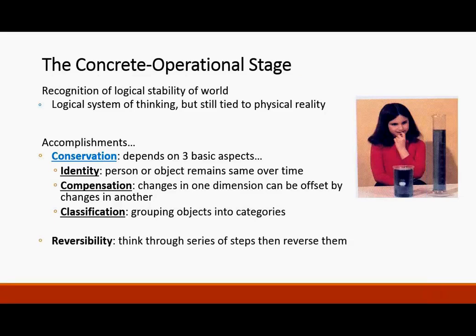In the concrete operational stage, children also develop reversibility — thinking through a series of steps and then reversing those steps. For example, moving furniture around in a room and thinking about putting it back where it was. Seriation is making an orderly arrangement — understanding that things go in an order and that step by step you can see the pattern of behavior: step one, step two, step three.